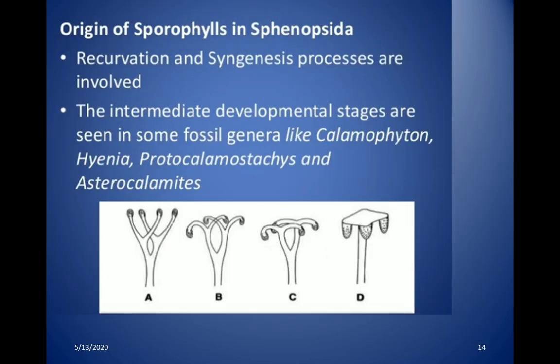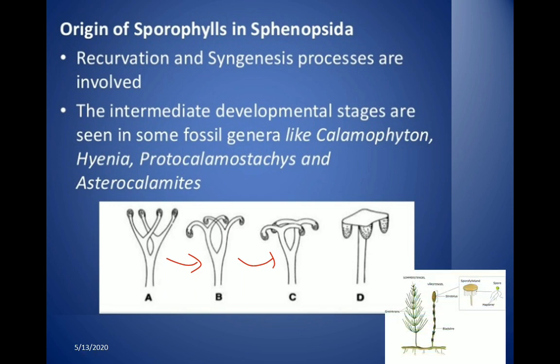In Sphenopsida, the processes of recurvation and syngenesis are involved. The figure shows how recurvation takes place: not only do the sporangia move downward, but their stalks also move downward. The Equisetum strobilus clearly shows how recurvation and syngenesis are involved in the origin of sporophylls in Sphenopsida.